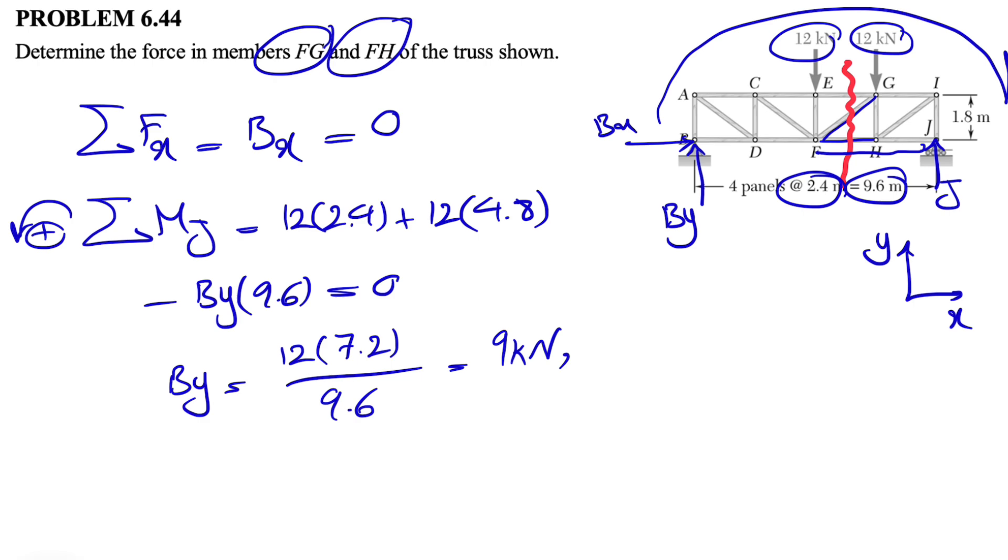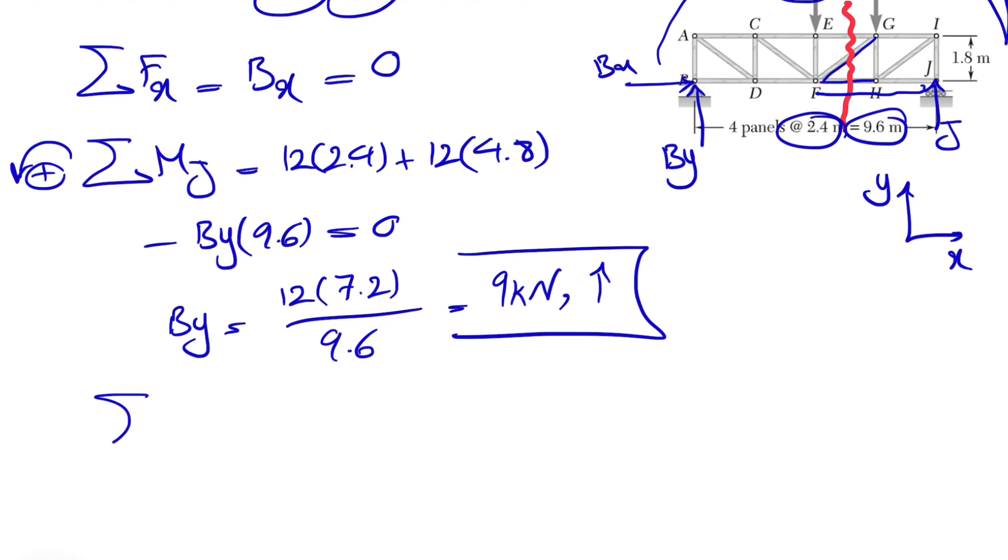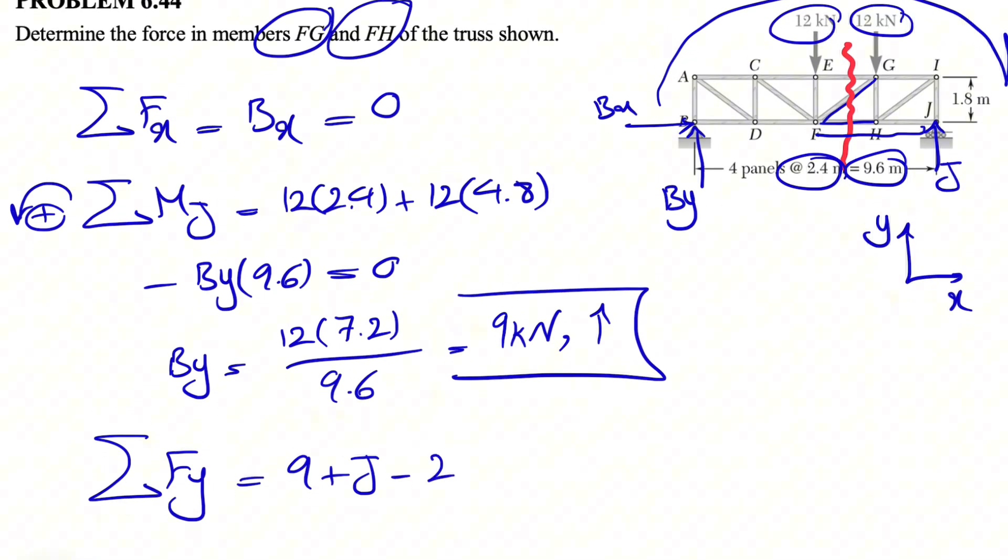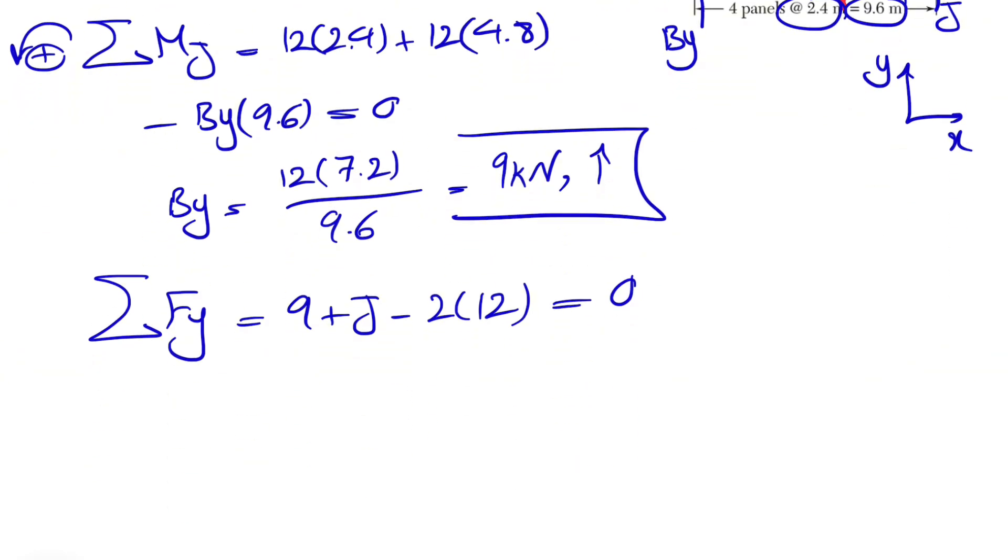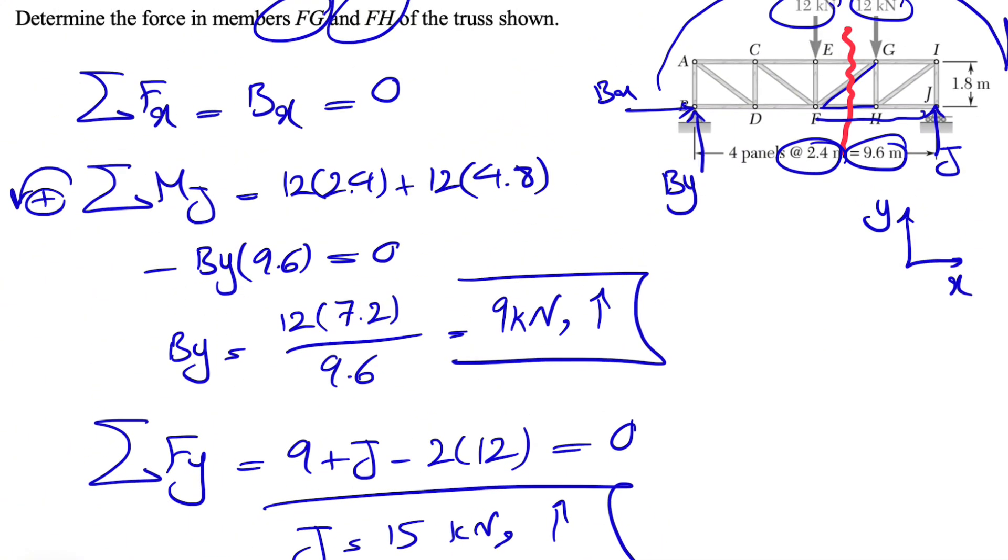No negative sign that shows that the direction was correct for BY. Now we can do sum of all forces in Y direction. So we have 9, which is our BY plus J minus 2 times 12 kN is equal to zero. Our J in here would be 24 minus 9, which will be 15 kN. Again, no negative sign in here that shows that our assumption at the beginning for the direction of BY and J was correct.